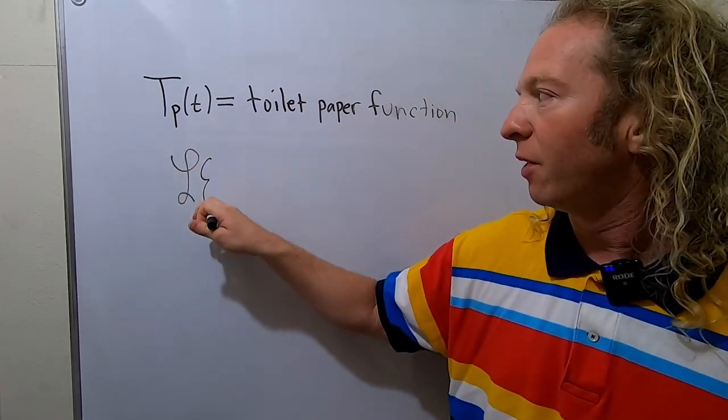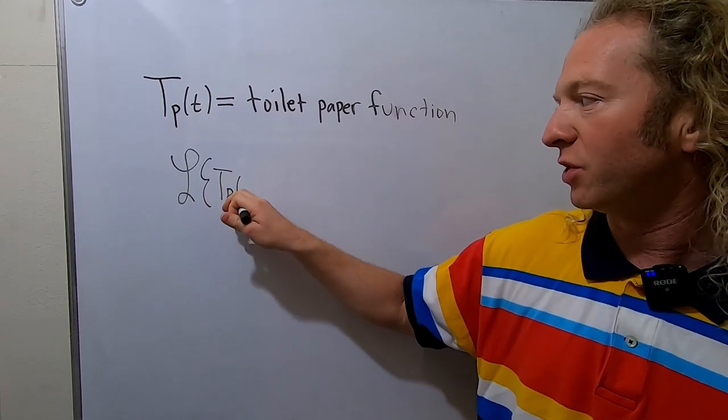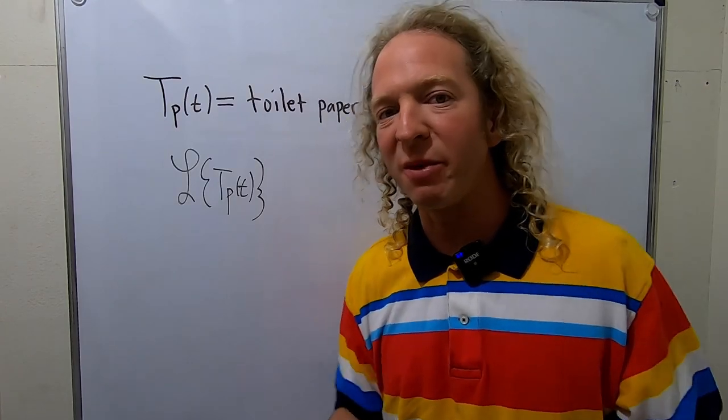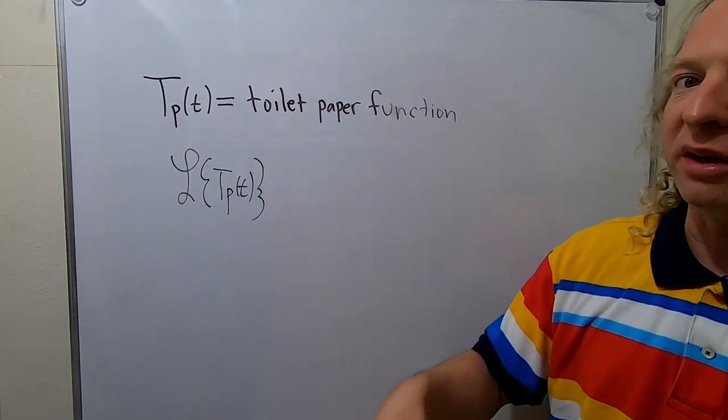So the Laplace transform of the toilet paper function, which is a function of time, it tells you how much toilet paper you need over a period of time in order to kill the coronavirus.